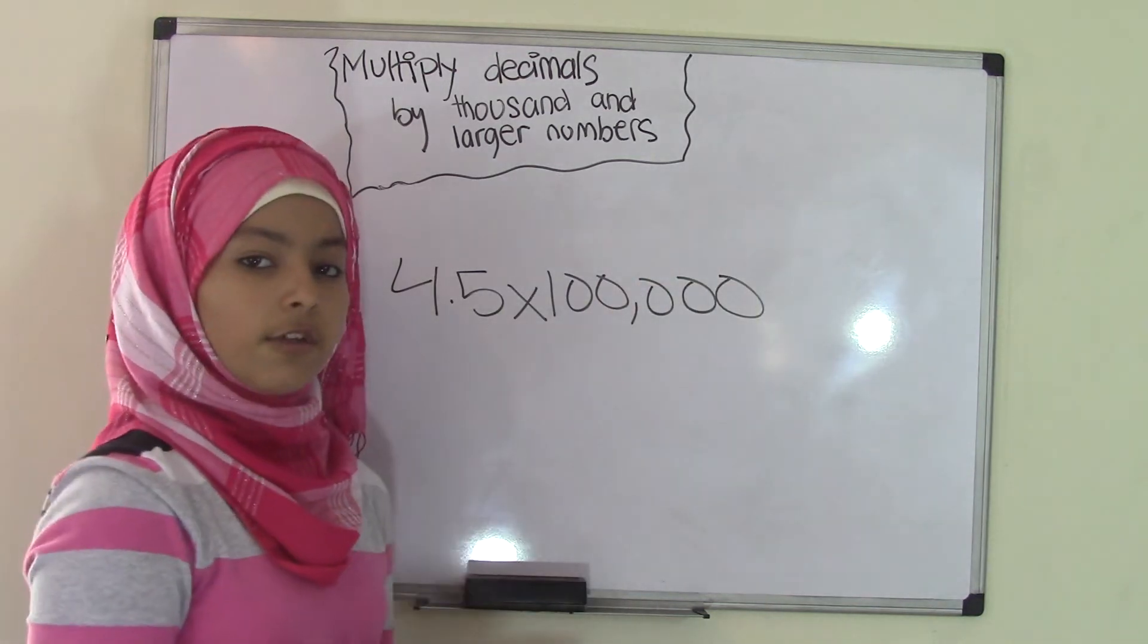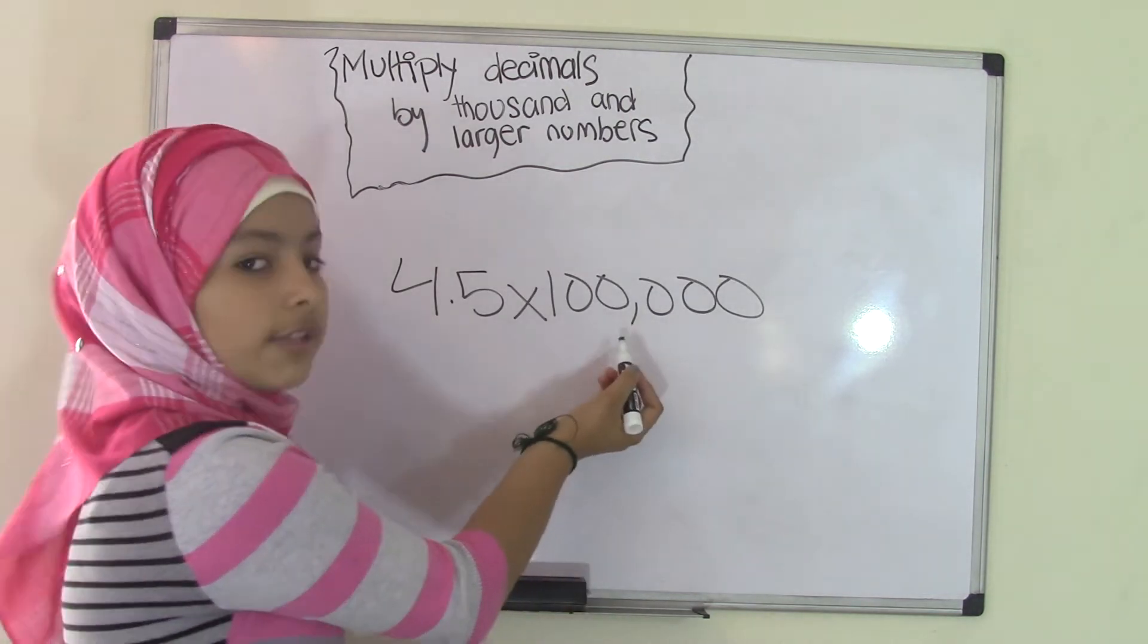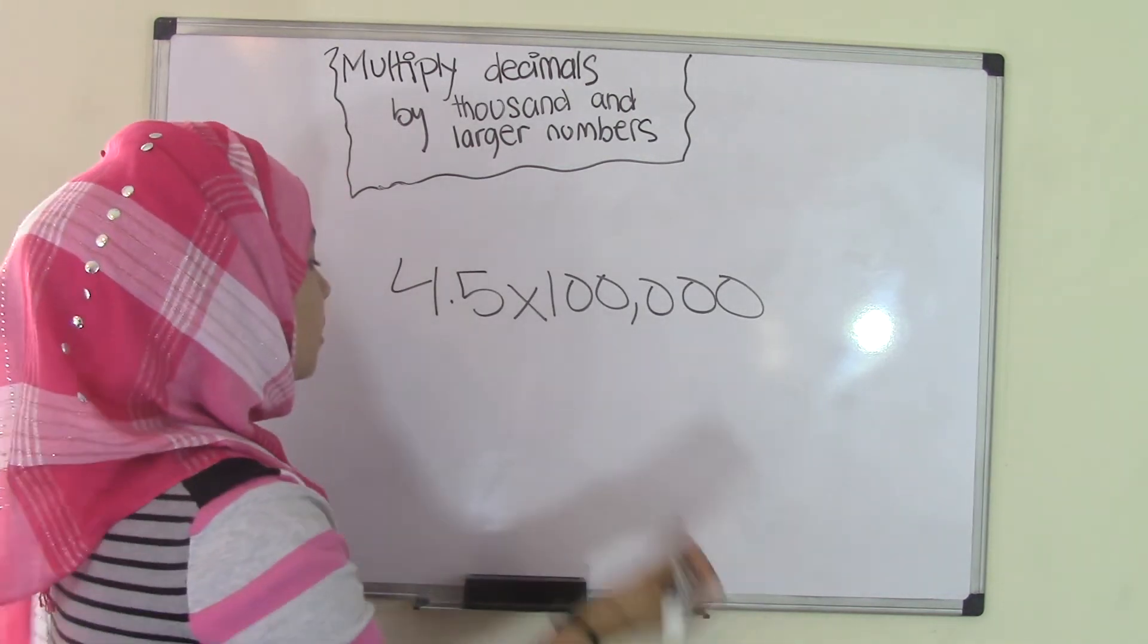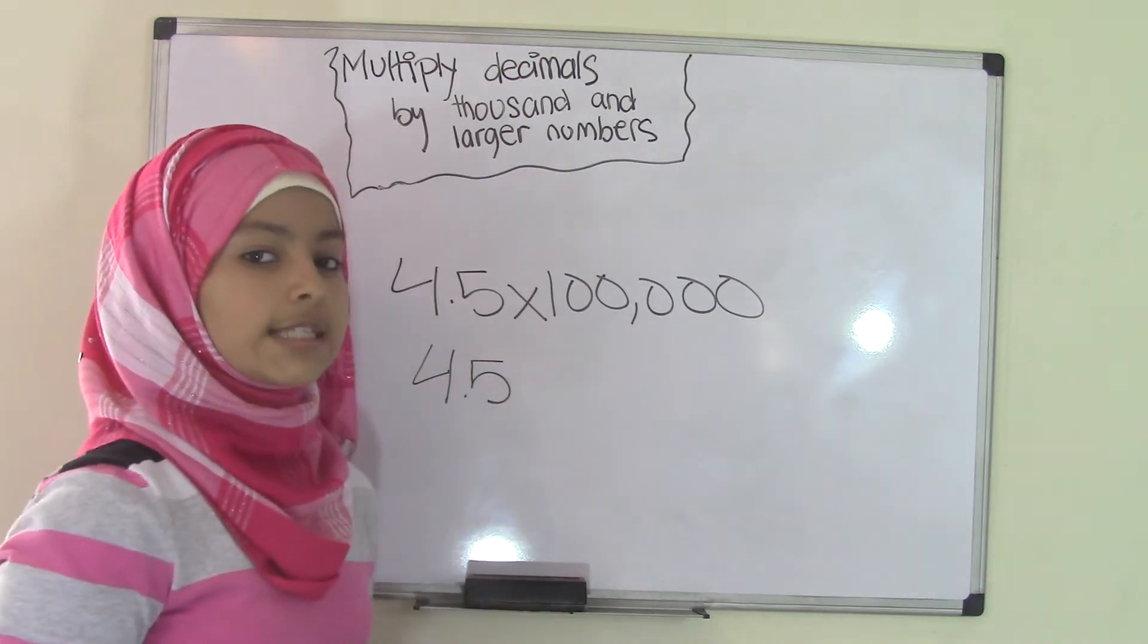So, once again, all we have to do is count the number of zeros in 100,000. And as you can see, 100,000 has five zeros. So, we're going to write this decimal number right here, 4.5, and move this five places.